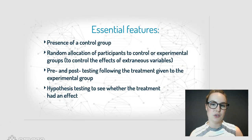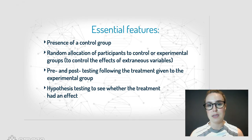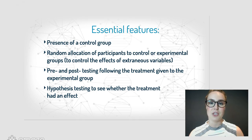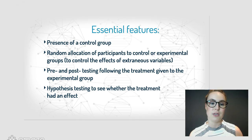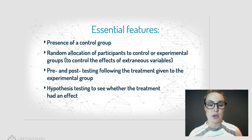The essential features of the experimental investigation design are: number one, the presence of a control group — it's really important that nothing changes in this control group. There is also random allocation of participants to either the control group or the experimental group, and it must be random. There is pre- and post-testing following the treatment given to the experimental group, and there is hypothesis testing to see whether the treatment actually worked.